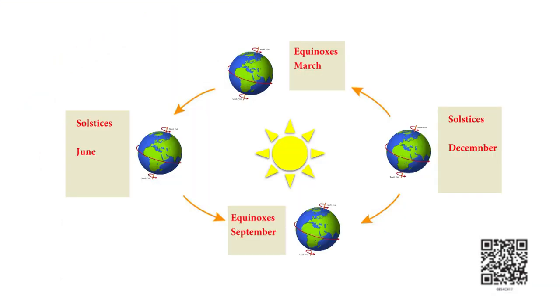We will now look at this diagram. This diagram shows the position of earth at four different times in a year. We have marked the position of earth during the solstices and equinoxes. We will see what these are.